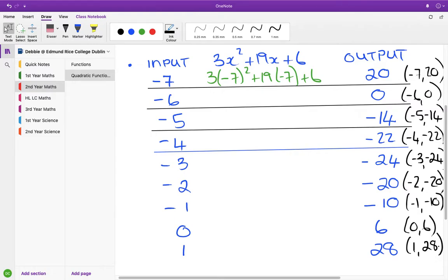Minus 1 with minus 10. 0 is 6 and 1 is 28. So the y-axis is huge there. We have to go from minus 24 all the way up to plus 28. So it's quite an extensive y-axis, but we can have a look at that.